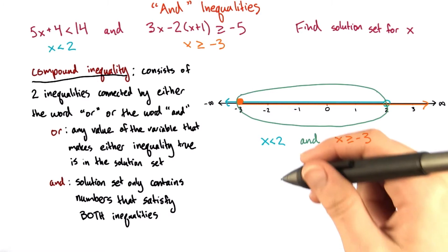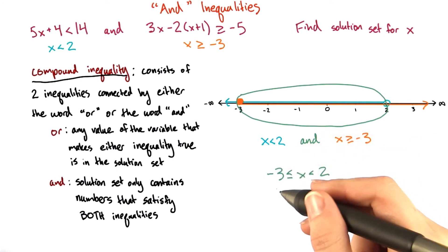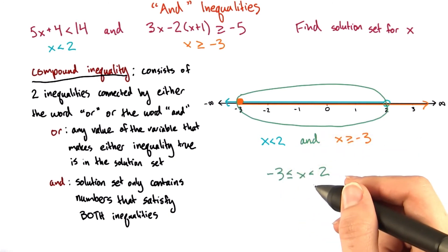This solution set can also be written like this, which reads negative 3 is less than or equal to x, which is less than 2.